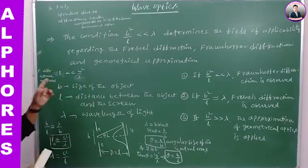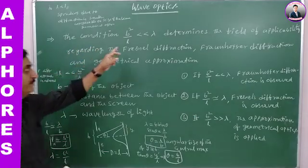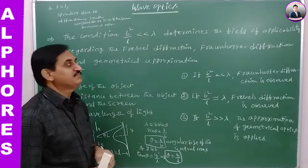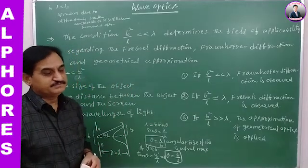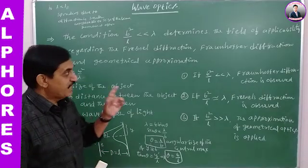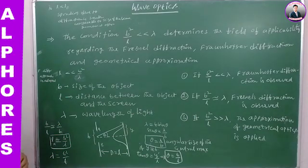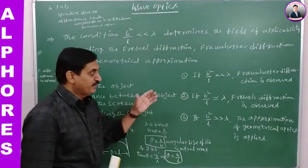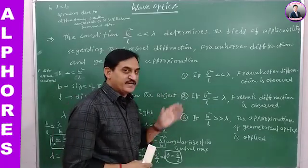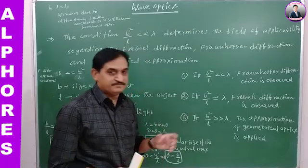The condition B squared by L less than less than lambda determines the field of applicability regarding Fraunhofer diffraction, Fraunhofer diffraction, and geometrical approximation. So there are three points: one is Fraunhofer diffraction, second is Fresnel diffraction, and the third is the approximation of geometrical optics.